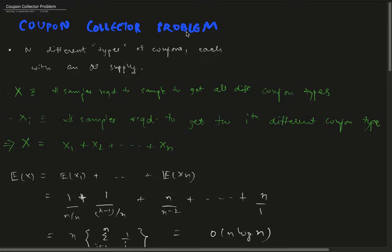For example, if in the first draw we got coupon type C_1, X_2 is the number of samples required to get the second different type of coupon. If on the second try we get C_1 again, we'll have to sample again to get the second different type of coupon.